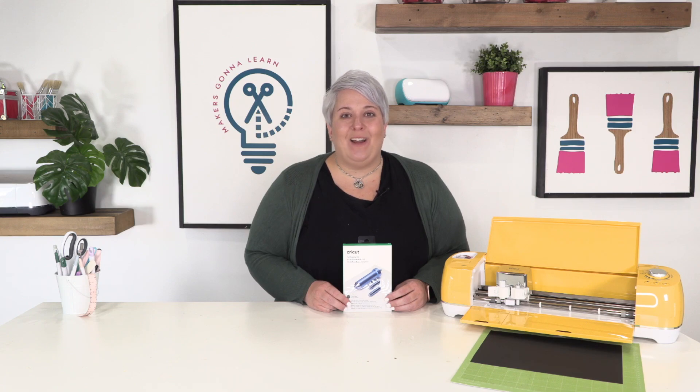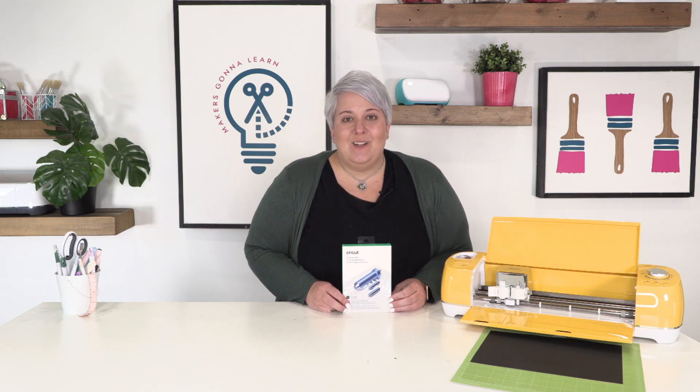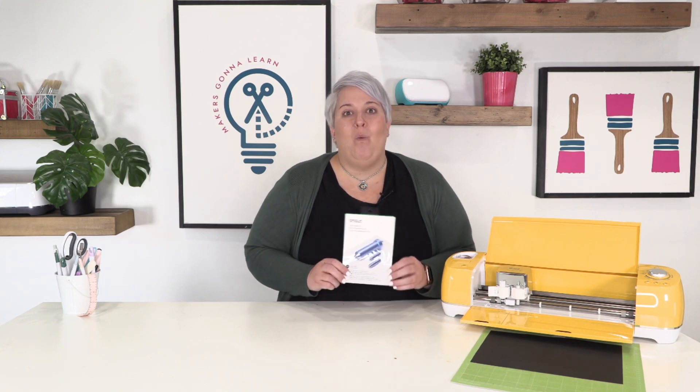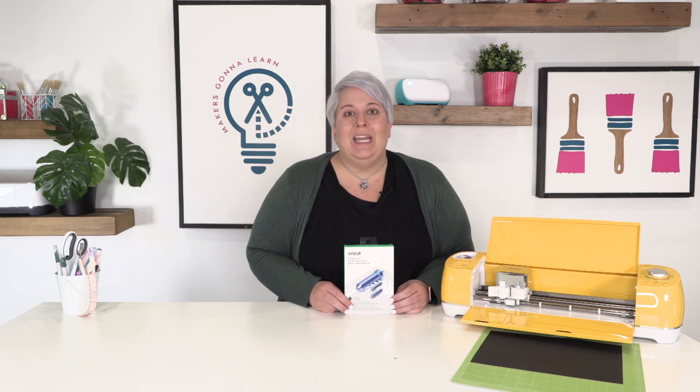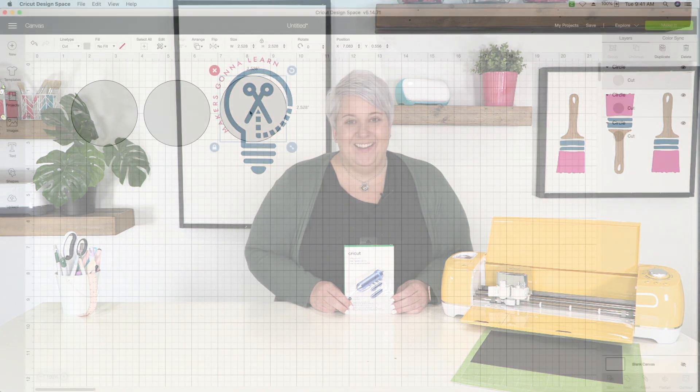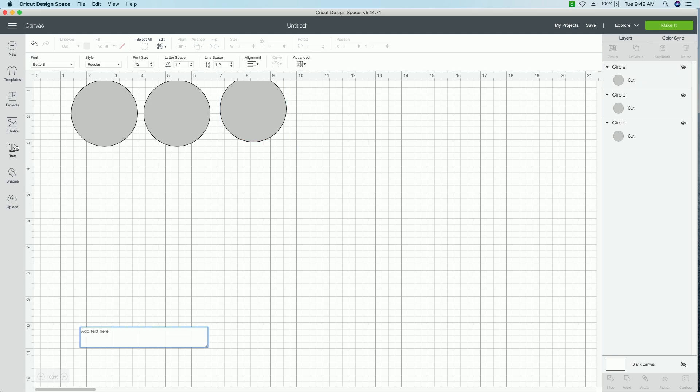Let's get started doing our comparison. I'm going to jump over into Design Space. We're going to be using a Makers Gonna Learn font today to do our comparison, and this is going to be a great demonstration on what the wonderful Cricut foil transfer tool can do for you. In Design Space, I've gone ahead and put three simple circles here, and then we're going to just grab a text box over from the left.